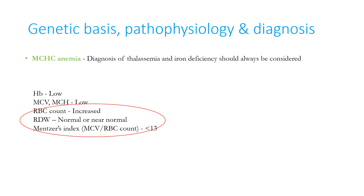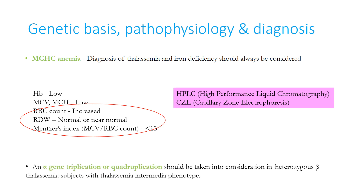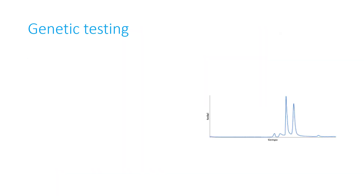The problem arises when iron deficiency coexists with thalassemia, which is common in India. For confirmation of thalassemia, we need high performance liquid chromatography (HPLC) or capillary zone electrophoresis to quantitate hemoglobin F% and hemoglobin A2%. An alpha gene triplication or quadruplication should be considered in heterozygous beta thalassemia patients with a thalassemia intermediate phenotype. Screening tests and HPLC are sufficient to diagnose beta thalassemia.